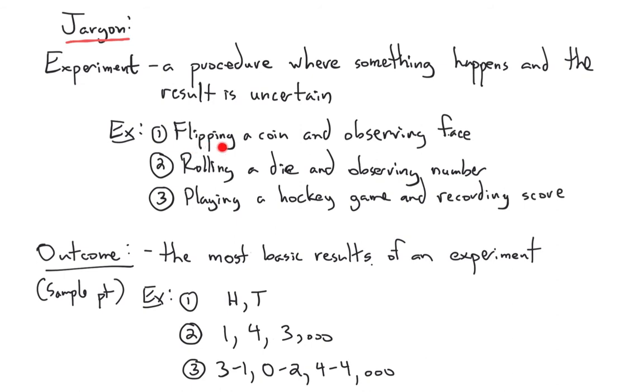I'll give you some examples. Well, if we flip a coin and we observe the face, we're uncertain what the face of the coin is going to be. It can either be a head or a tail. So that's an uncertain result. Or we can roll a die and observe the number. It could be a one, two, three, four, five, or six on this die. So it's uncertain what happens.